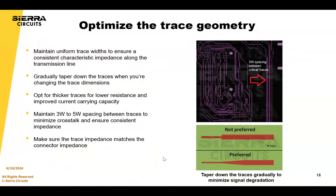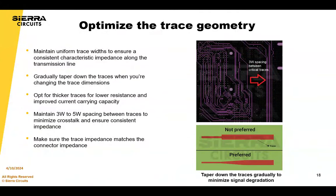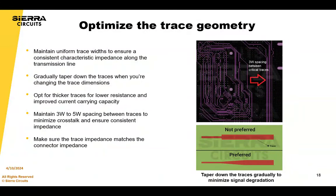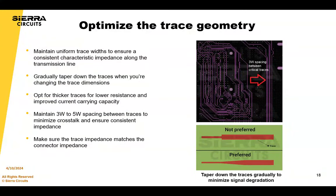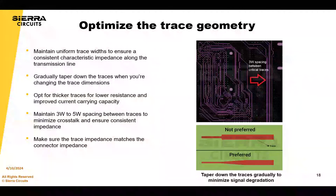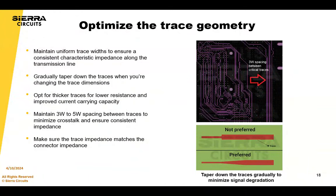For controlled impedance techniques, you want to maintain a uniform trace width along the transmission line to achieve consistent characteristic impedance. When changing your trace dimensions, taper down the traces gradually to minimize any reflection or degradation and reduce your chance of impedance mismatches. Opt for thicker traces for lower resistance, which also improves trace current carrying capacity. Maintain 3W to 5W spacing between traces to minimize crosstalk and ensure uniform impedance.